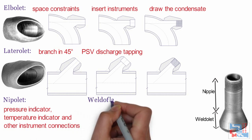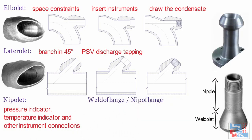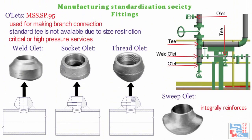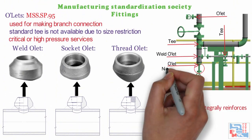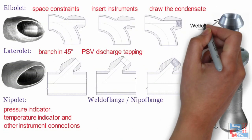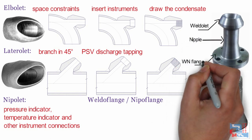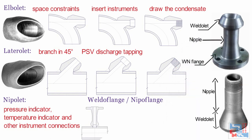Next is the weldoflange or nipple flange, used to have flange branch connections. It is a combination of weldolet, nipple, and weld neck flange. On screen, you can see different combinations of elbowlet and lateralette along with nipple flange.